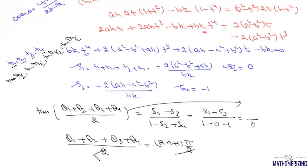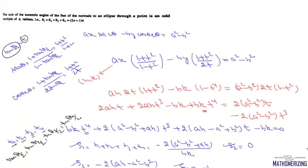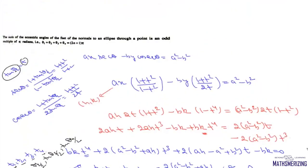Therefore, θ₁ + θ₂ + θ₃ + θ₄ must be an odd multiple of π. Hence, for conormal points on an ellipse, the sum of eccentric angles must equal an odd multiple of π.